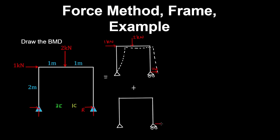For this second case we apply our unknown reaction in the left direction, and that gives a deflected shape of the frame that looks something like this, with UB going to the left. Note that before and after deflection, the members remain perpendicular to each other at the joint, because they're rigidly connected in a frame.